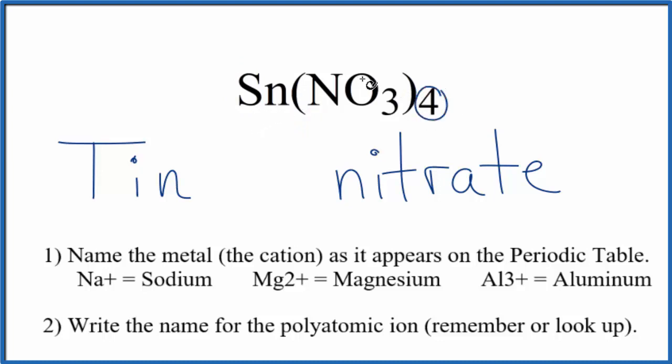Here it's bonded to four of these nitrate ions. Each nitrate ion has a charge of one minus. Four times one minus is four minus. The tin atom has to have a charge of four plus so the overall net charge will be zero.